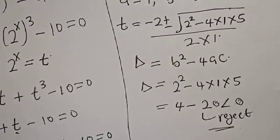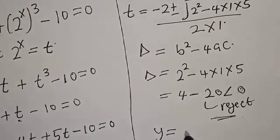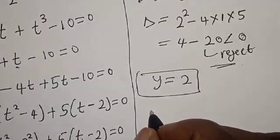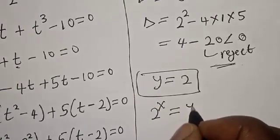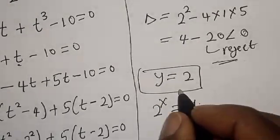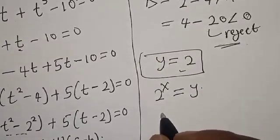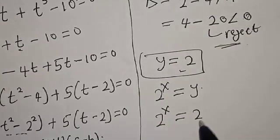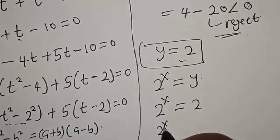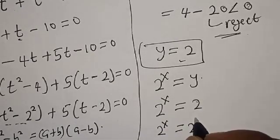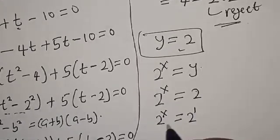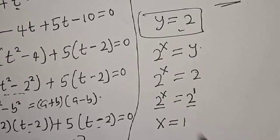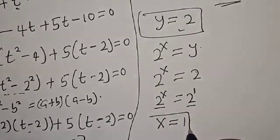Therefore the real solution we have is t equals 2. But remember that 2 raised to power x equals t, and t equals 2. So 2 raised to power x equals 2, which is the same as 2 raised to power 1. They have the same base, so x equals 1. That is the real value of x we are looking for.